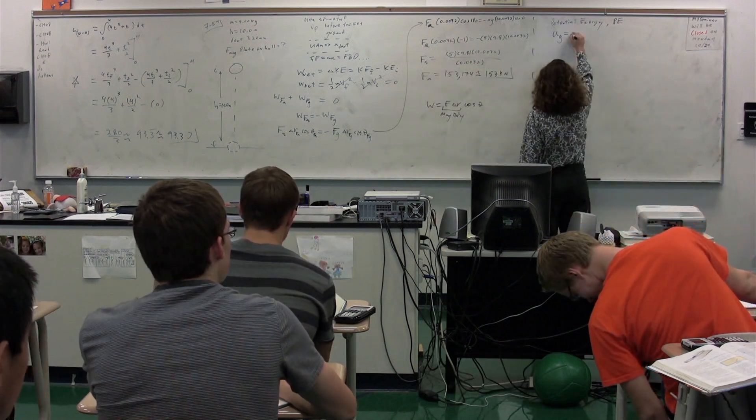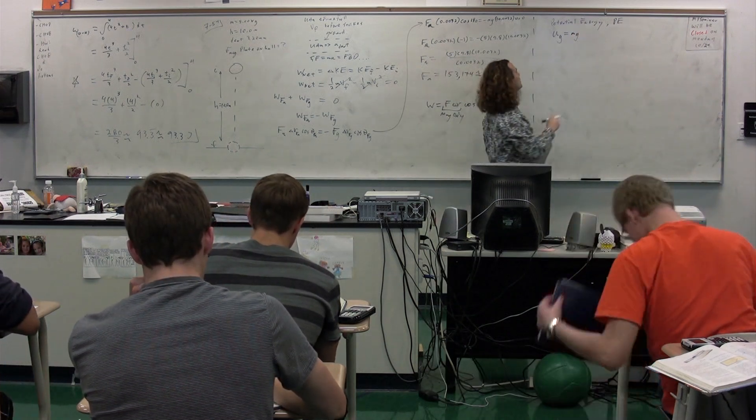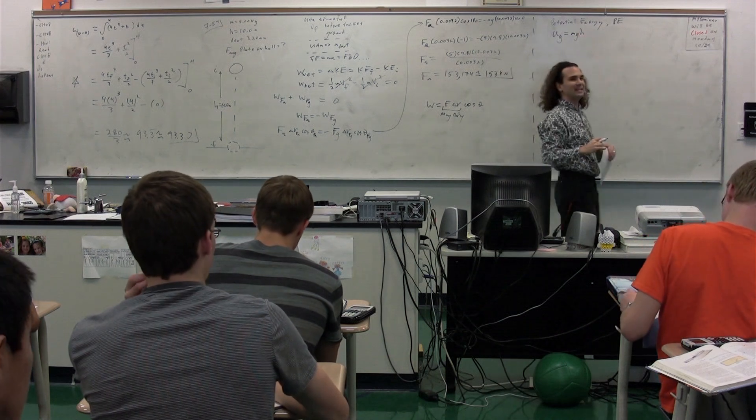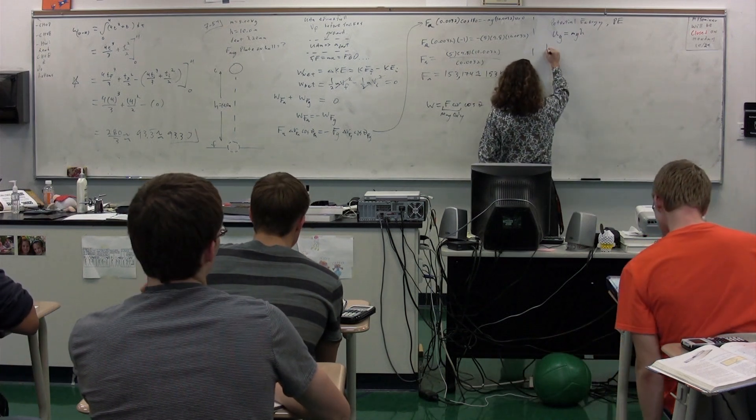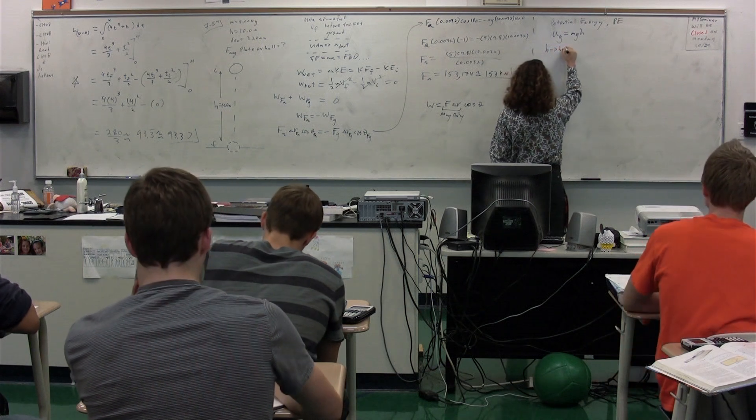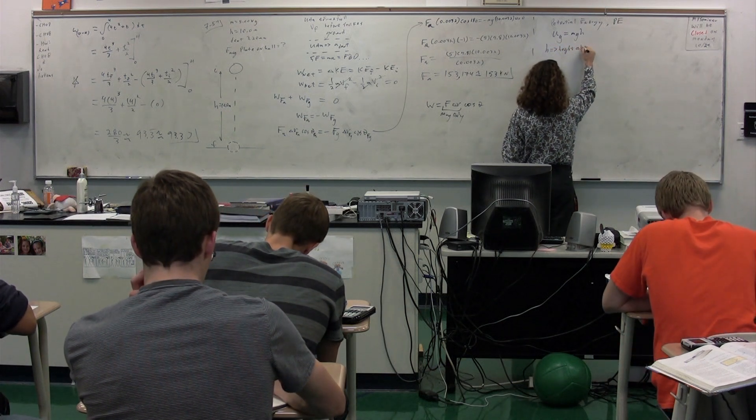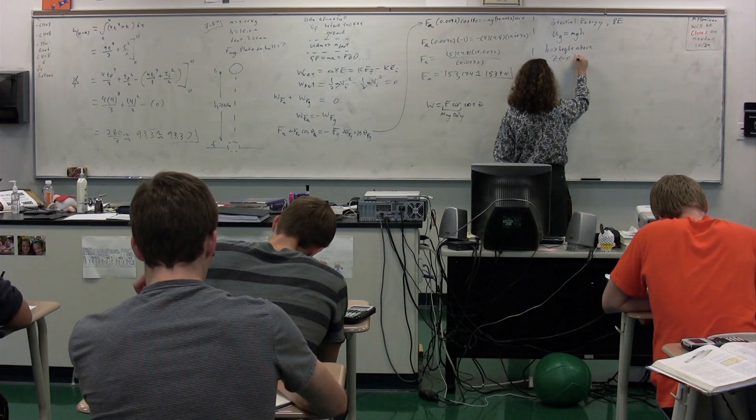Where M is the mass, G is 9.8 meters per second squared. What is H? Remember, H is the height above what is called the zero line.